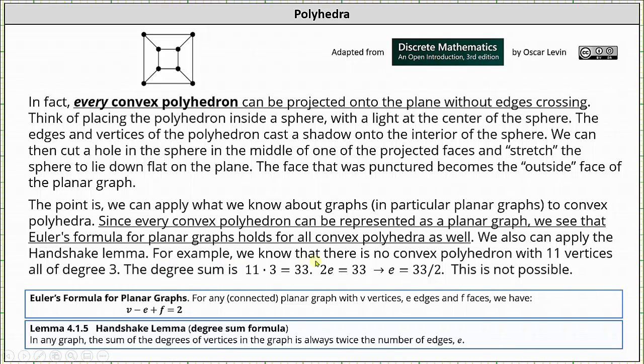For example, we know that there is no convex polyhedron with 11 vertices, all of degree 3. Notice here the degree sum is 11 × 3 = 33, which is equal to twice the number of edges, giving us the equation 2e = 33. Solving for the number of edges, we divide both sides by 2, which gives us e = 33/2, which is not a whole number and therefore not possible. There is no convex polyhedron with 11 vertices, all of degree 3.